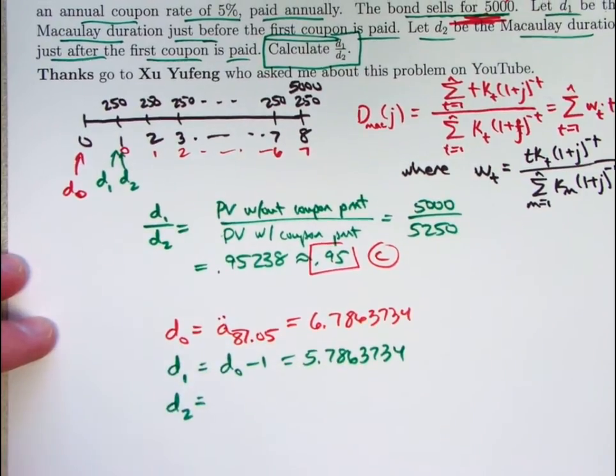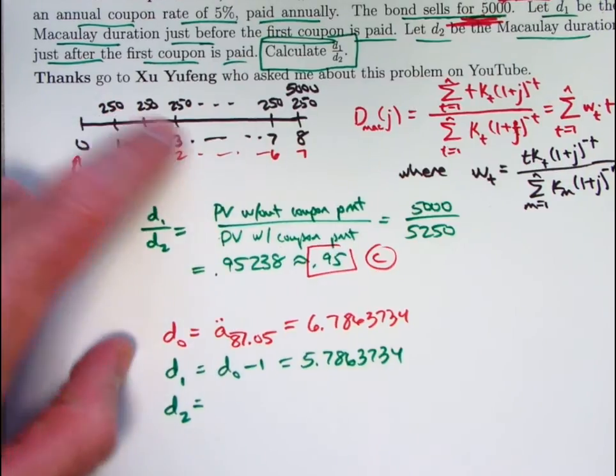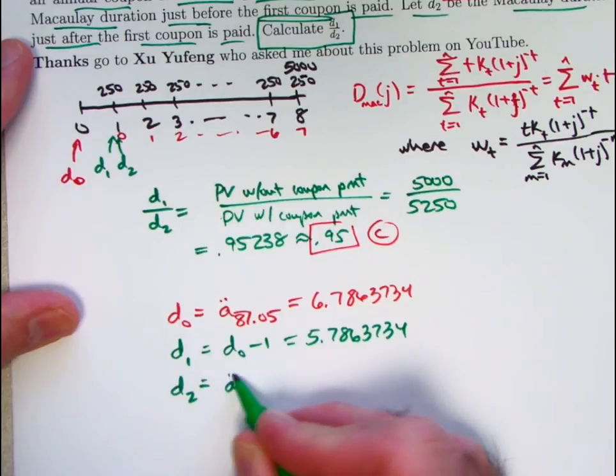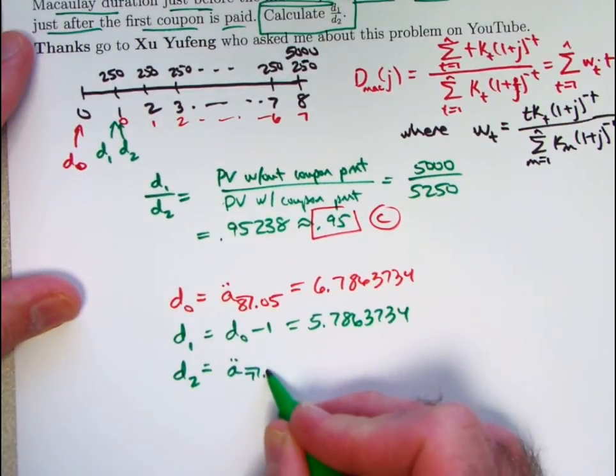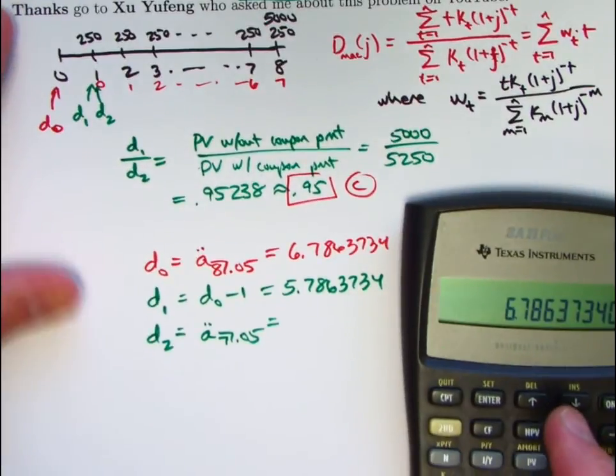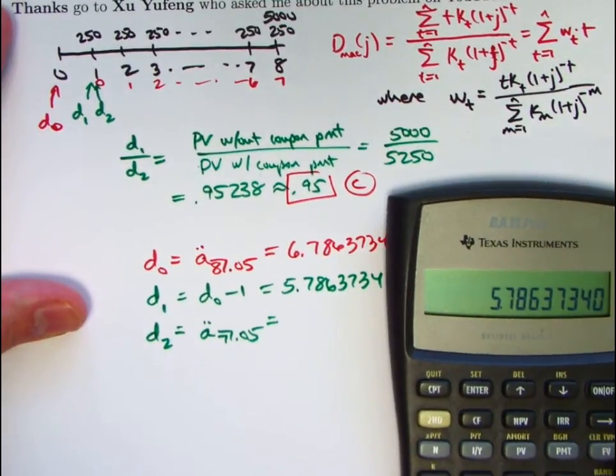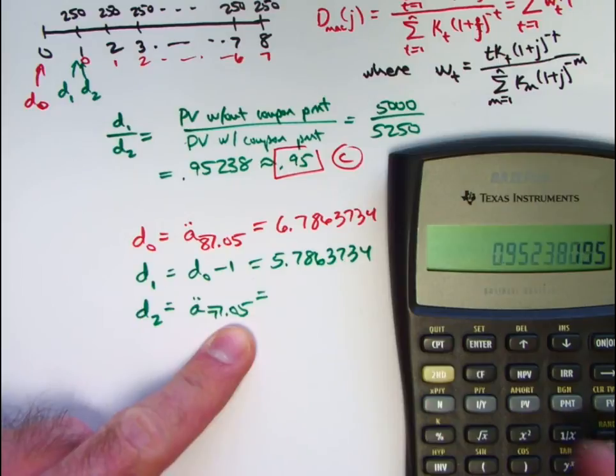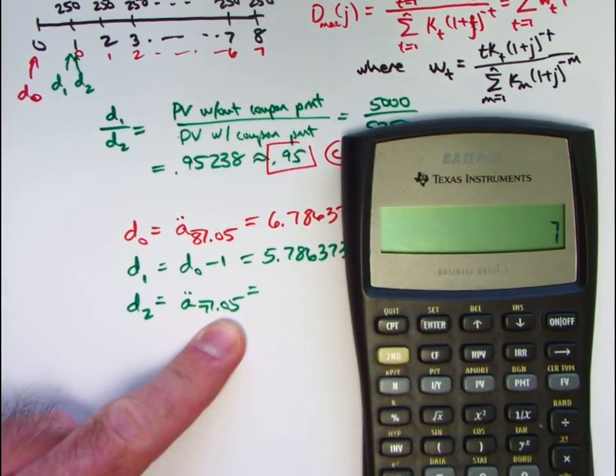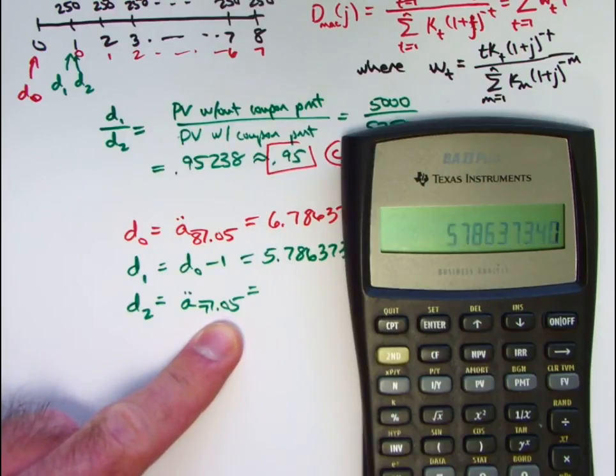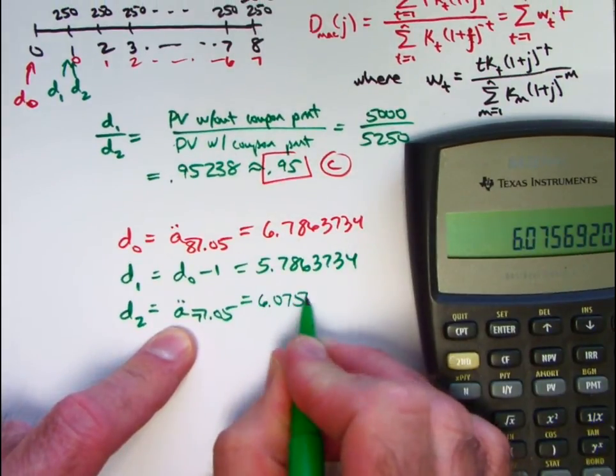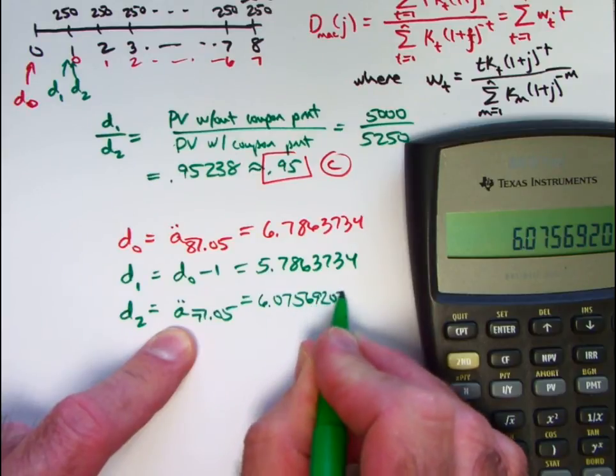And D2, since we're finding duration right after that coupon is paid relative to what's remaining, that's also going to be an annuity due value, except with 7 payments instead of 8. Let's see what this turns out to be. Let me store this value here. Sort of 1. What about D2? 1.05, reciprocal again is V. Now to the 7th power, subtract from 1, divide by 0.05, and then times 1.05, because it's a double dot. Get about 6.07569207.